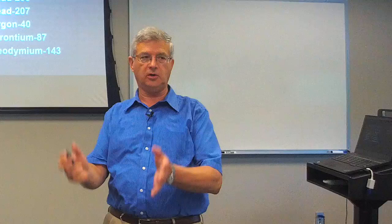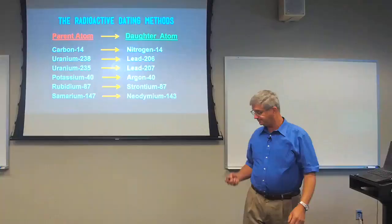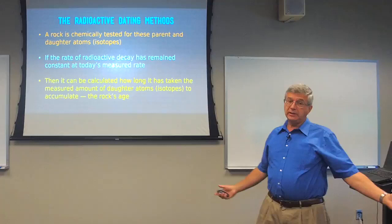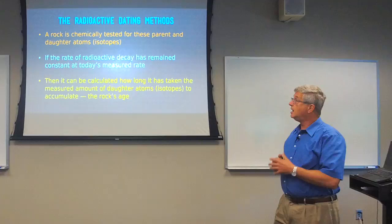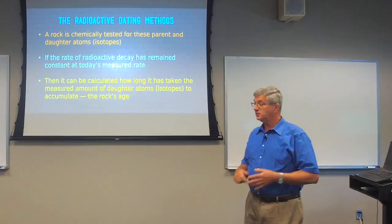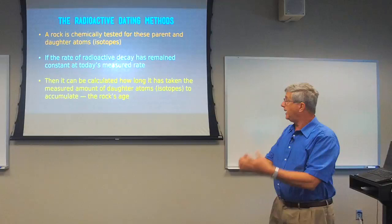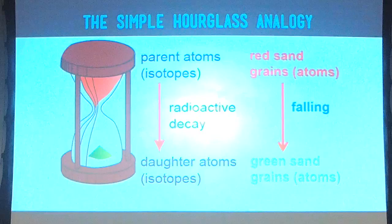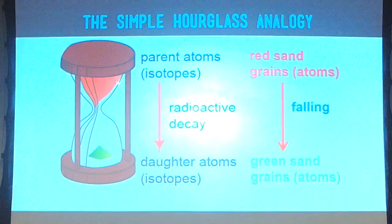How do we go about the dating process? A rock is chemically tested for parent and daughter atoms. If the rate of radioactive decay has remained constant at today's measured rate, we can calculate how long it has taken for the measured amount of daughter atoms to be derived from parent atoms — and that time is regarded as the rock's age. A good analogy is an hourglass: red sand grains at the top are analogous to parent atoms, the falling is analogous to radioactive decay, and green sand grains at the bottom represent daughter atoms.